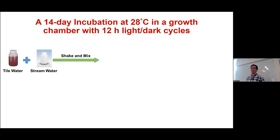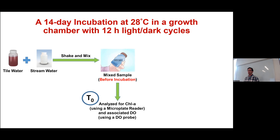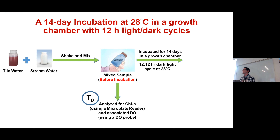Our second hypothesis was that streams without a prior history of excess nutrients — pristine streams, less than maybe one milligram of nitrogen per liter — would be more sensitive to eutrophication than streams regularly showing high nutrient concentrations, where our cutoff was five milligrams per liter. Third, that greater mixing volumes — more tile water relative to stream water — will also exacerbate eutrophication.